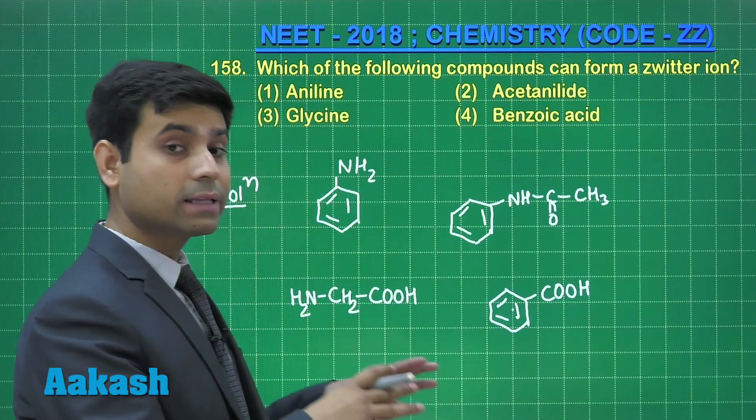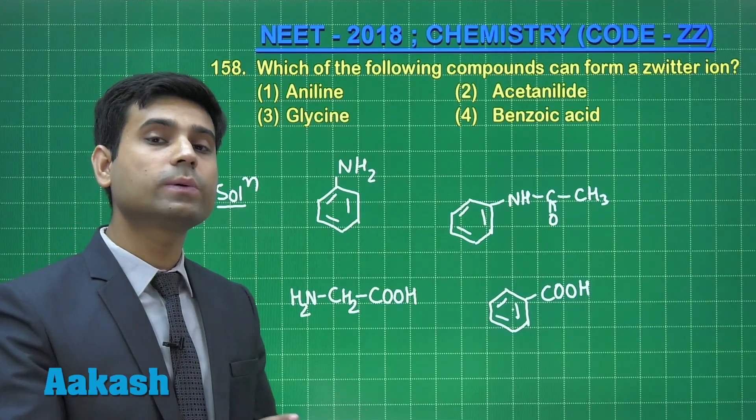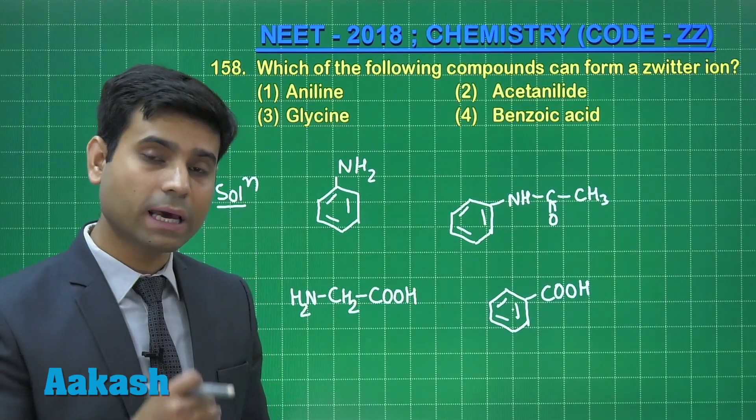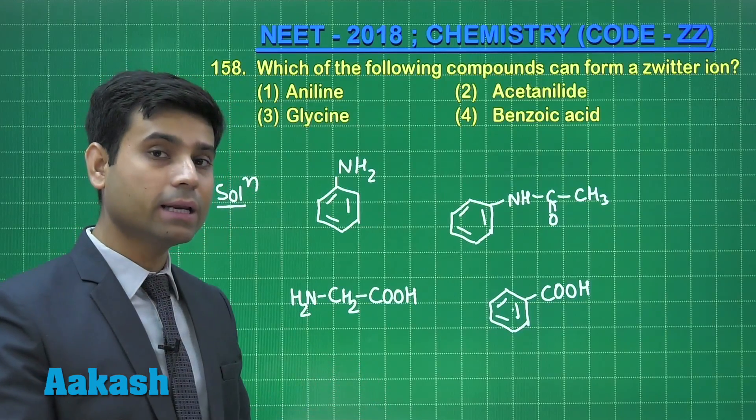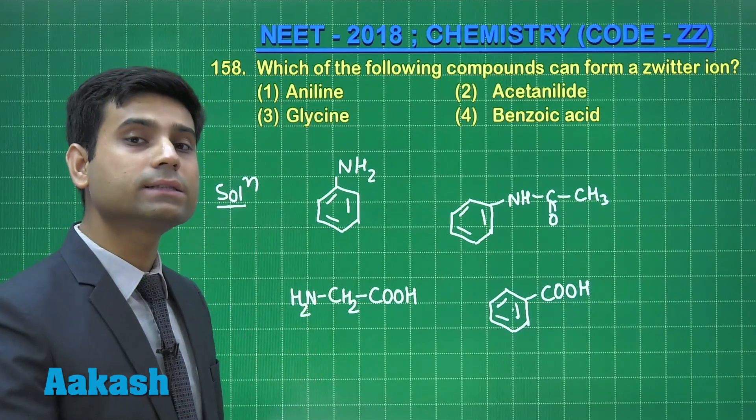Students, only that compound will form the zwitterion which contains both acidic as well as basic group. The zwitterion is a bipolar ion containing positive as well as negative charge.